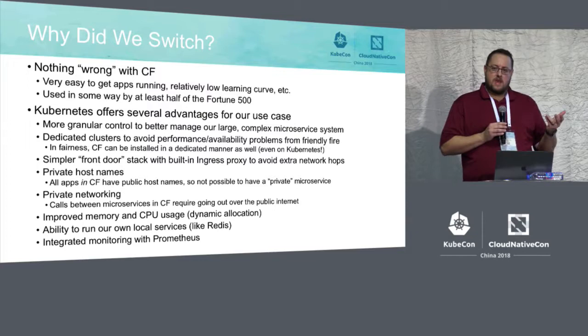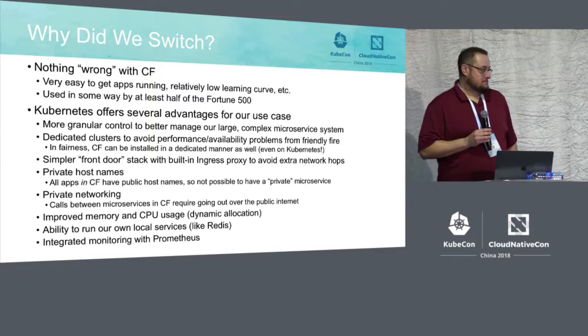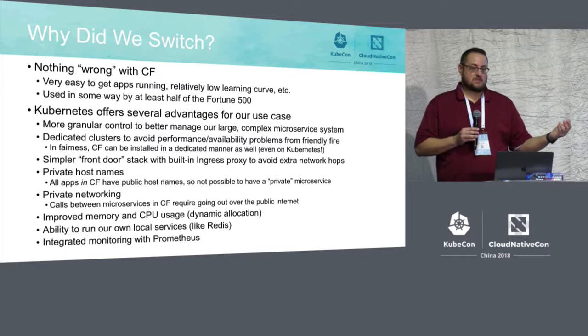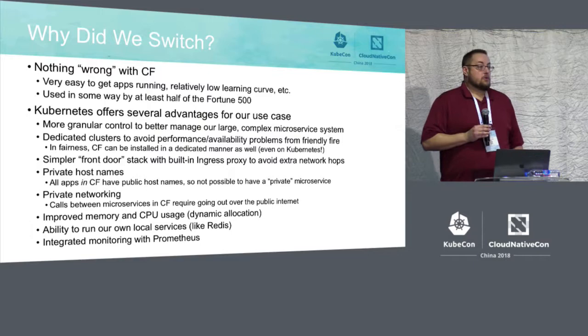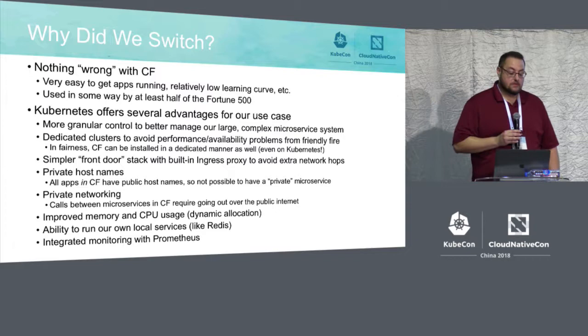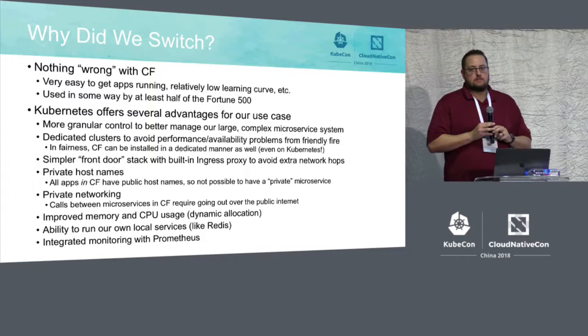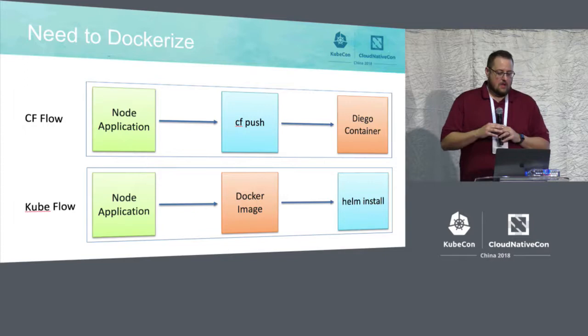We also saw a nice performance gain by using the private networking in Kubernetes, so you can make direct calls from microservice to microservice without leaving the cluster — whereas in Cloud Foundry we were doing pretty large network hops. We've noticed a lot of improved memory and CPU usage over Cloud Foundry, since in Cloud Foundry you have to allocate memory in advance — maybe a gigabyte per instance with three instances, that's three gigabytes set aside — whereas Kubernetes is more dynamic and makes pretty efficient use of memory and CPU. Kubernetes also gives us flexibility to run local services like Redis and databases within the cluster, and it has integrated monitoring with Prometheus.